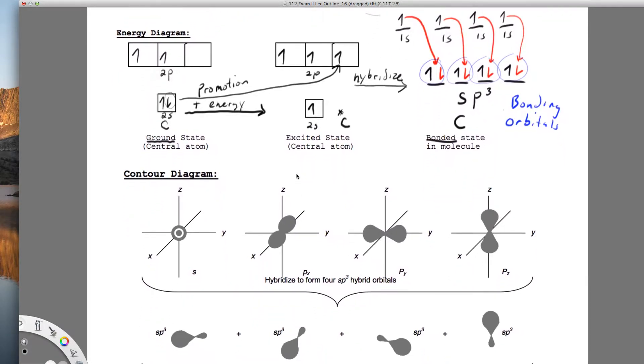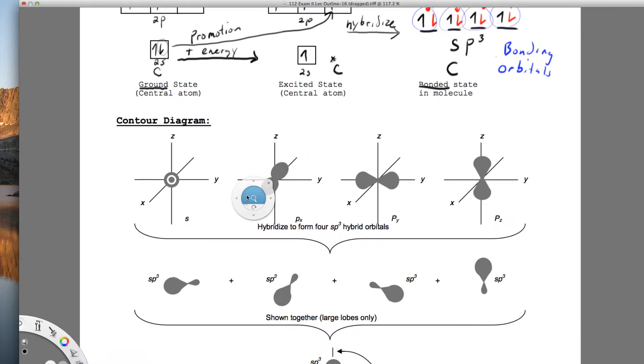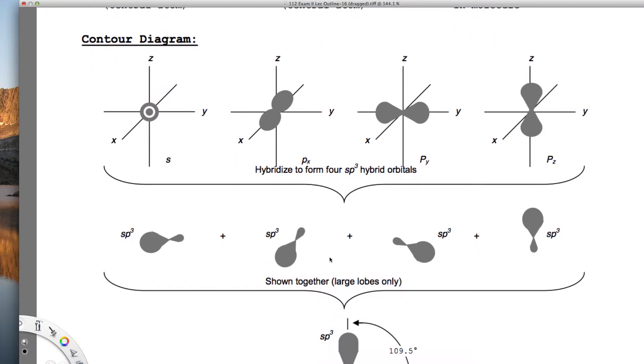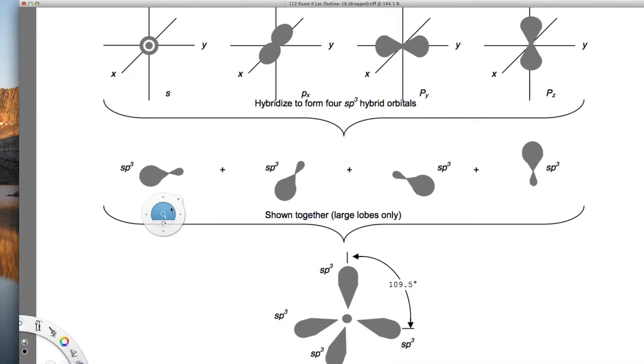What I'd like to do now is take a look at those four orbitals. You can see that I took my original S, and my PX, my PY, and my PZ on those three-dimensional axes, and then when we hybridize, we end up with four equivalent SP3 orbitals.